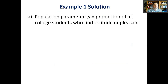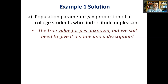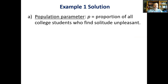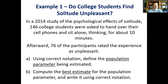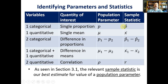We don't know the numerical value of P — nobody does — but we still need to give it a name and description. P exists; it is a number. There is some proportion of college students in the United States who don't like sitting by themselves with no cell phone; we just don't know what that percentage is. The idea is that we're trying to learn about that unknown proportion. The sample gives us information about it, and that's what Part B is about: compute the best estimate for the population parameter.